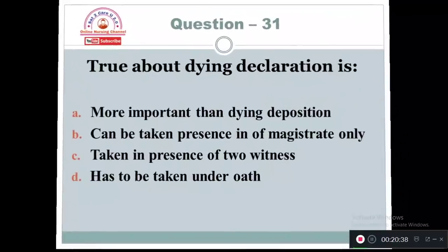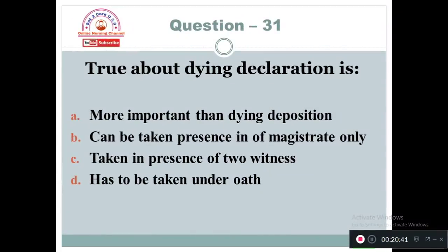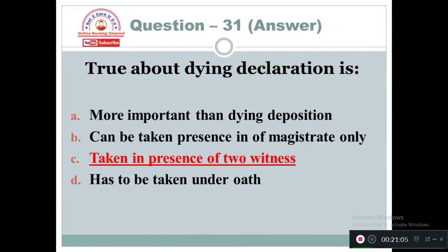Question 31: True about dying declaration is: Option A: More important than dying deposition. Option B: Can be taken in the presence of a magistrate only. Option C: Taken in the presence of two witnesses. Option D: Has to be taken under oath. Dying declaration is always taken in the presence of two witnesses, as a magistrate is not always possible to come.